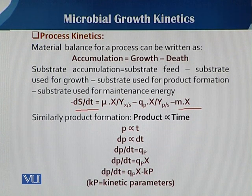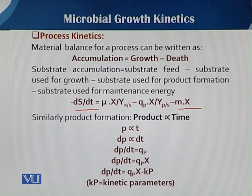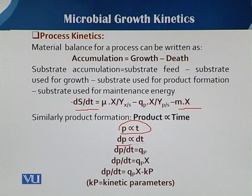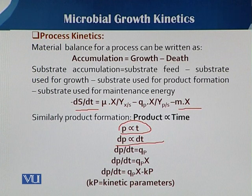If we calculate or draw the relationship between product and fermentation time, we can say that product is directly proportional to time. As incubation time during fermentation increases, product will increase. So the change in product concentration is directly proportional to the change in time. Converting this proportionality to an equation, dp/dt is equal to qp, where qp is the product quotient.